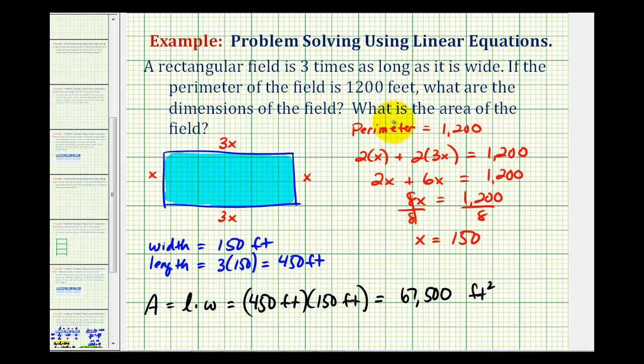So from the given perimeter we were able to determine the dimensions of the rectangle. And then from the dimensions we were able to determine the area of the rectangle.